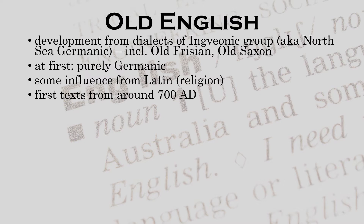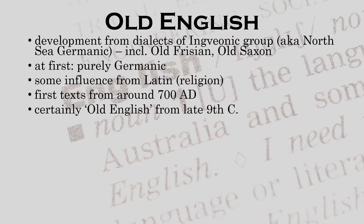The first texts in the Roman alphabet date from about 700 AD. We tend to speak of Old English at least from the late ninth century onwards, but some linguists put it much further back — even to the start of the settlement of the Angles and Saxons at the end of the fifth century.